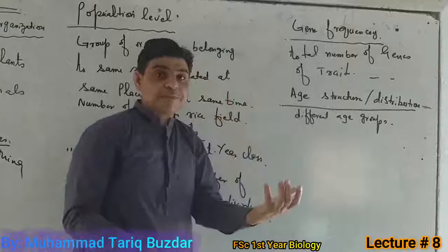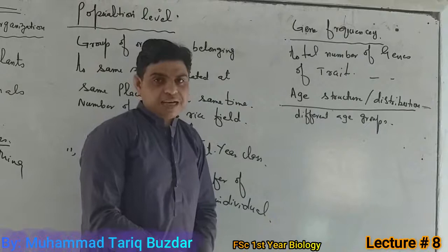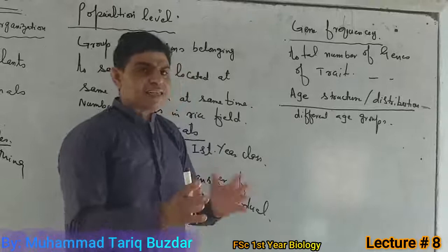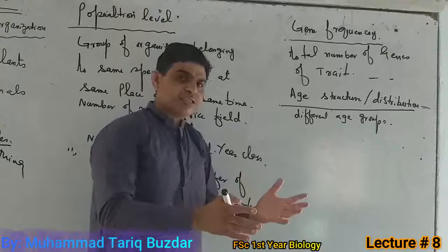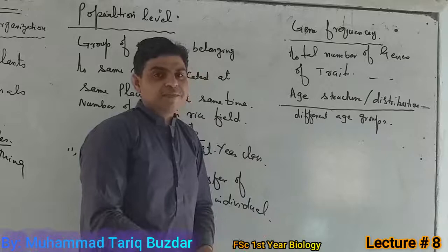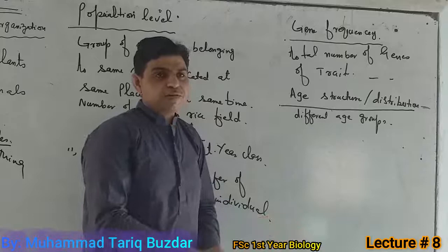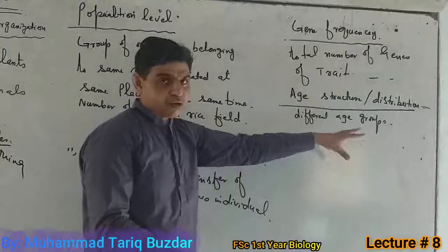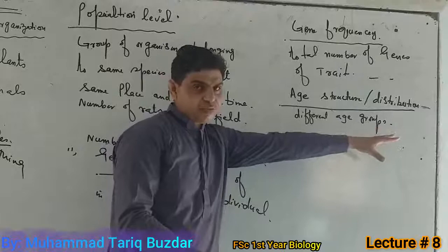If we discuss age structure in a human population, we can have three categories: the first category is children, the second is youth, and the third is old age. These are the age groups that are the characteristics of the population's age structure or age distribution.